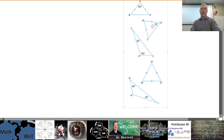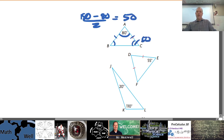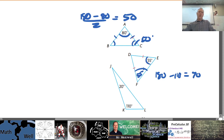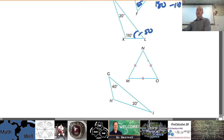First triangle: if the top angle is 80° and it's isosceles, the two base angles are each (180 − 80) ÷ 2 = 50°. Second triangle: 55° and 55° is 110°, so the third angle is 180 − 110 = 70°. Third triangle has angles 110° and 20°, summing to 130°, leaving the third angle as 50°. The equilateral triangle has all angles equal to 60°.